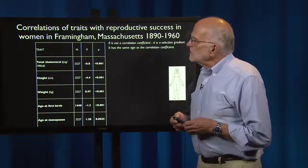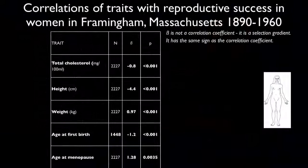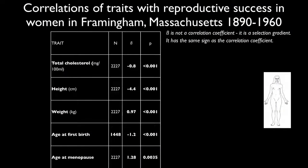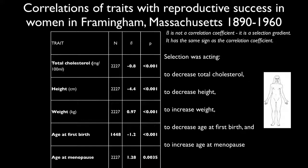Let's take a look at one example. Here is a table of traits correlated with reproductive success from women in Framingham, Massachusetts, born between 1890 and 1960. The traits are cholesterol, height, weight, age at first birth, and age at menopause. This beta is a selection gradient — it has the same sign as a correlation coefficient. The sample sizes are large, the p-values are small, and these are all significant effects. Selection was acting to decrease total cholesterol, decrease height, increase weight, decrease age at first birth, and increase age at menopause. So selection is acting in a contemporary human population, and this result has been confirmed in other populations as well.